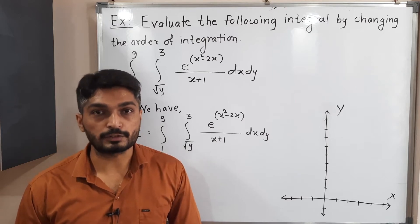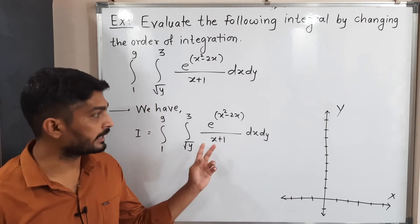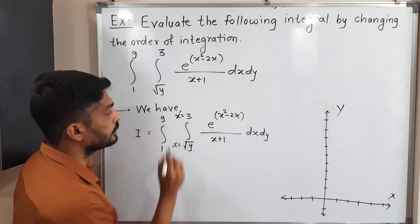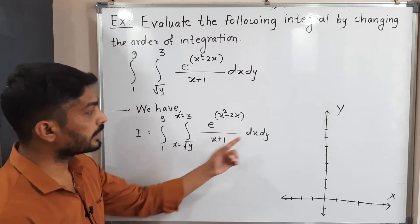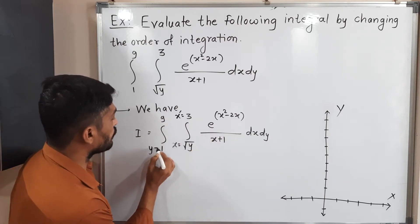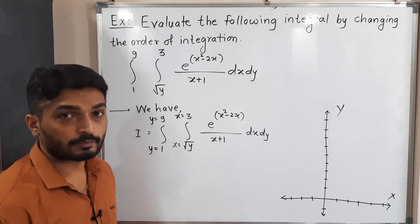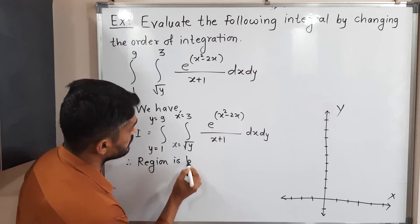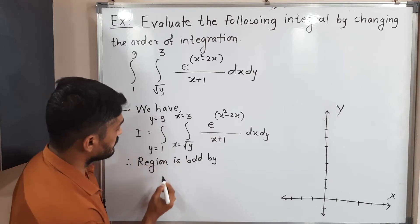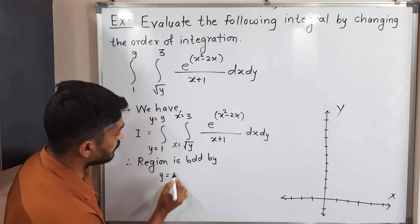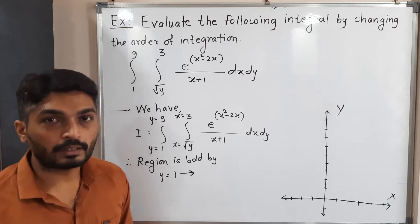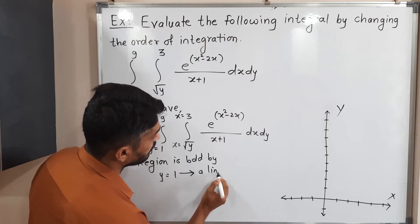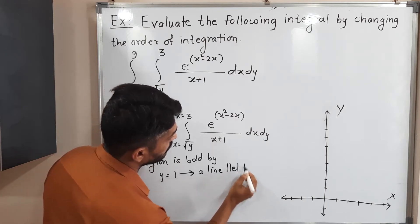Let us find the region of integration first. The inner integration is with respect to x, so these are the limits of x. Let me write x equals to x equals to, and the outer integration is with respect to y, so y equals to y equals to. The region is bounded by the following curves. First, y equals one — this is the equation of a straight line parallel to the x-axis.